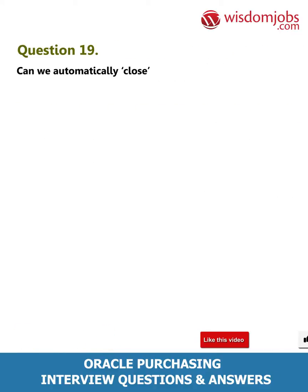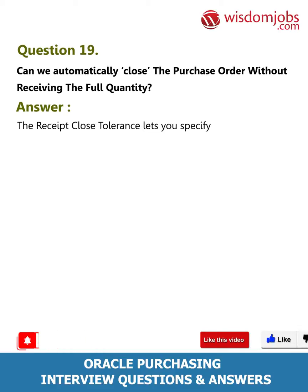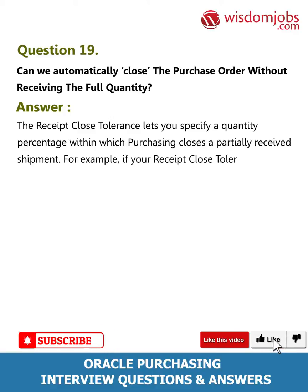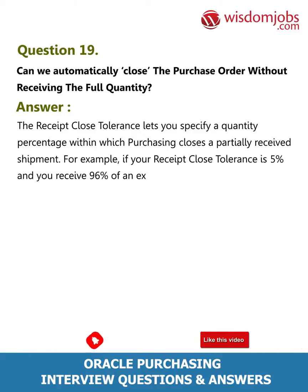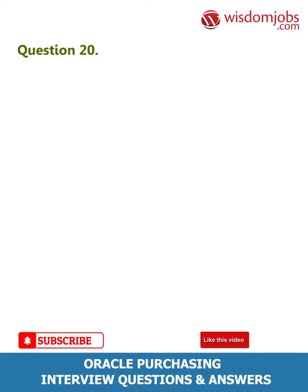Question 19: Can we automatically close the purchase order without receiving the full quantity? Answer: The receipt close tolerance lets you specify a quantity percentage within which purchasing closes a partially received shipment. For example, if your receipt close tolerance is 5 percent and you receive 96 percent of an unordered shipment, purchasing automatically closes this shipment for receiving.